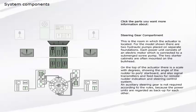On the top of the actuator there is a scale with degrees, showing the angle of the rudder to port or starboard, and also signal transmitters and feedbacks for remote rudder indication and steering control system.